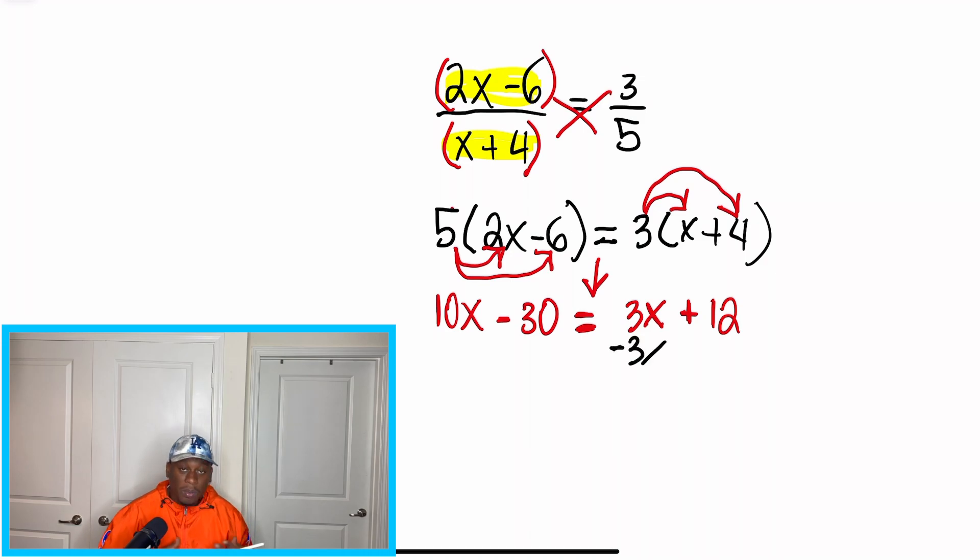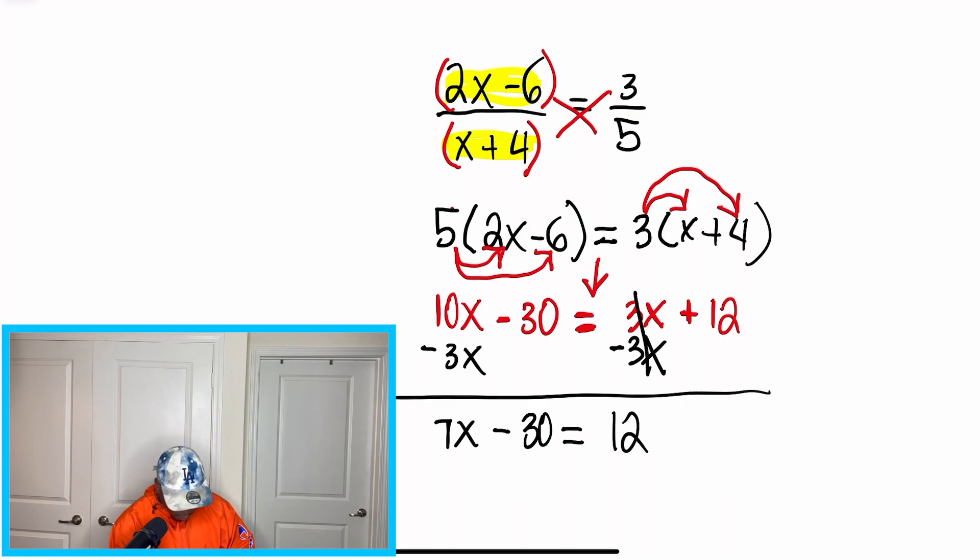Alright, so what I'm going to do now is I'm going to combine my like terms, and I'm going to start off with my variables. So we're going to subtract 3x from itself so that we can cancel this term out and get it to 0. And then, we're going to go on the other side of the equal sign, and we're going to do the same thing to its like term. And when I bring this equation down, this is what I'm going to have left.